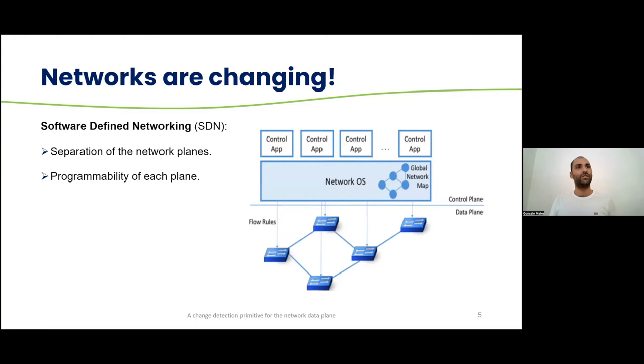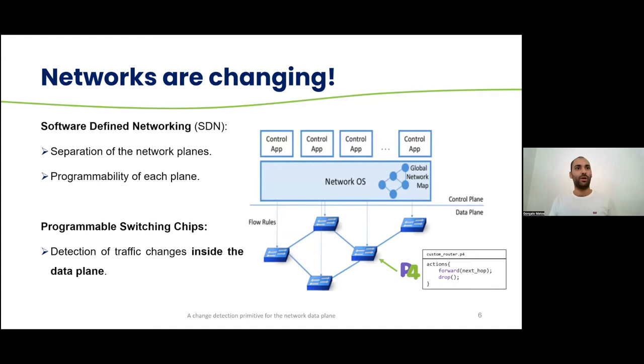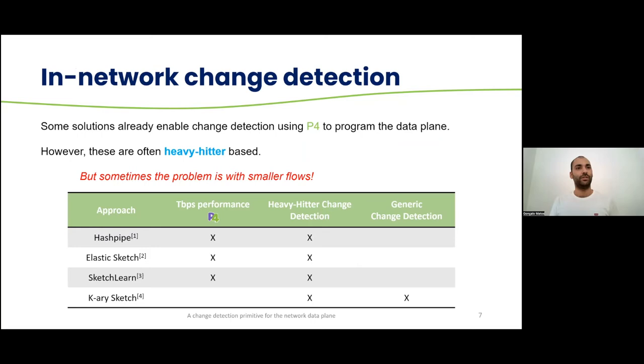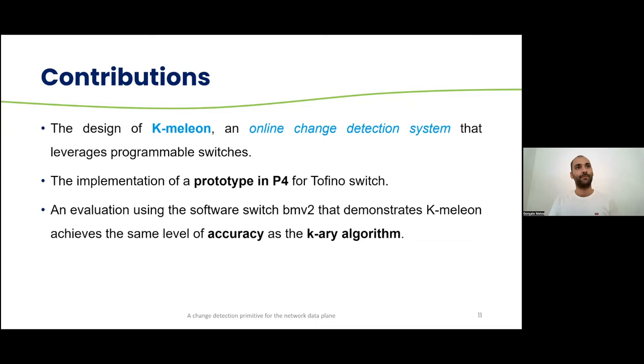But networks are changing, and with software-defined networking, we have enabled the separation of the control from the data plane, and we have enabled the programmability of both the control and the data plane now. Together with programmable switching shifts and the P4 language, we have now enabled or might enable the detection of traffic changes inside the data plane too. There are already some in-network change detection techniques that use P4 to perform change detection. However, these techniques are often based on heavy hitters only. These heavy hitters are the flows that contributed the most for the network traffic. However, sometimes the problem is with smaller flows. So we are going to tackle the problem using a different approach, that is the K-Area sketch, which is an offline technique, but it already performs generic change detection. So we will be targeting terabit per second performance using this technique, using P4 for the data plane.